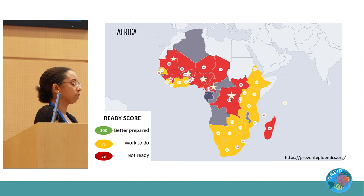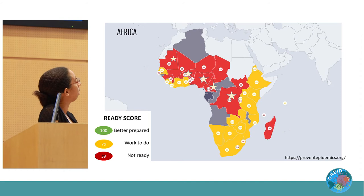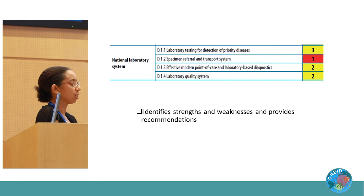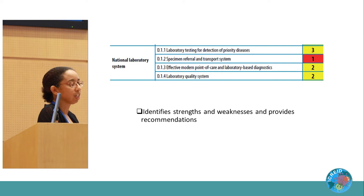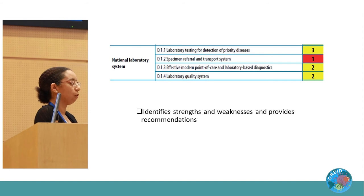We are targeting five countries in the sub-Saharan region that are all at the red stage: DRC, Cameroon, Nigeria, Burkina Faso, and Mauritania. When we disaggregate across the 19 JEE components, we focus on the National Laboratory System. Specifically, we are targeting indicators D1.2 and D1.4. We can already look at the JEE mission report, which contains the score along with details about strengths, weaknesses, and recommendations for improvement.